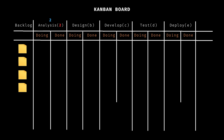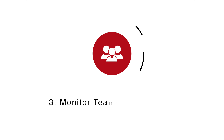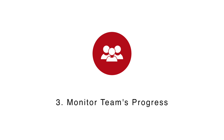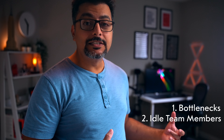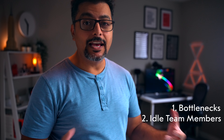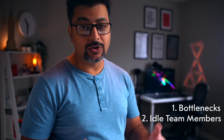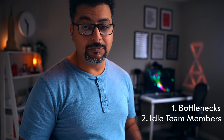This way, each person has at least one item to work on at any given time. It's not perfect, but it's a solid place to start. So our initial WIP limits are two for analysis, three for design, four for develop, three for test, and one for deployment. Step number three: once the team starts using the Kanban board, monitor their progress. Look for bottlenecks or idle team members and adjust the WIP limits as needed to ensure a smooth workflow and keep everyone engaged.